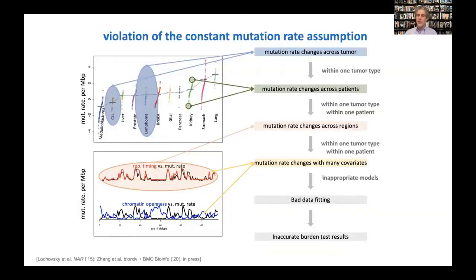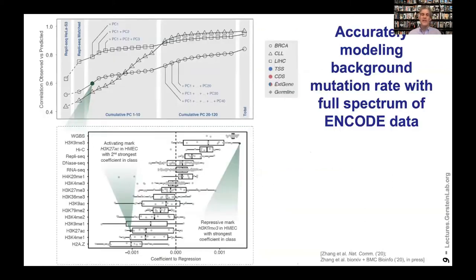The mutation rate is correlated with many different types of genomic signals in addition to replication timing — for instance, it's also correlated with open chromatin. ENCODE has a wealth of this genomic signal data. We've shown how you can put a lot of this data together into a model to estimate the background mutation rate. We do principal components of all the different types of ENCODE signal data and use these PCs to estimate the background mutation rate. We need lots of PCs — often 10 or 20 — to accurately estimate it, and the histone mark data is very important for this estimation.